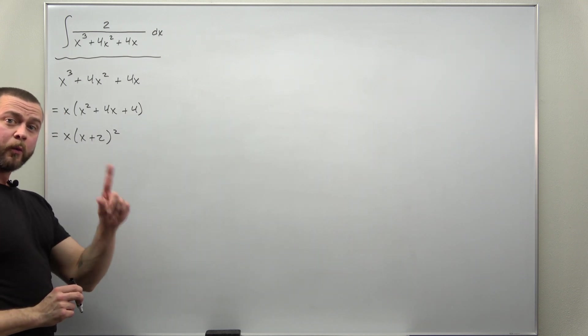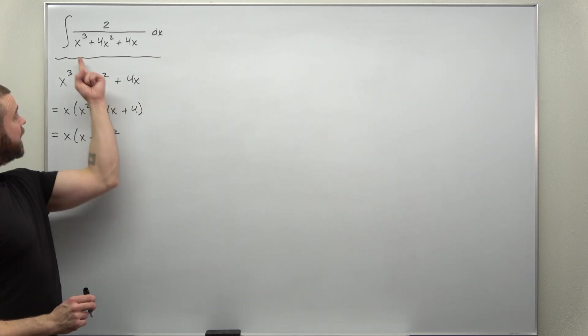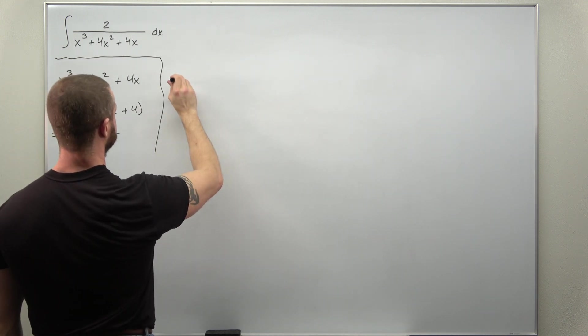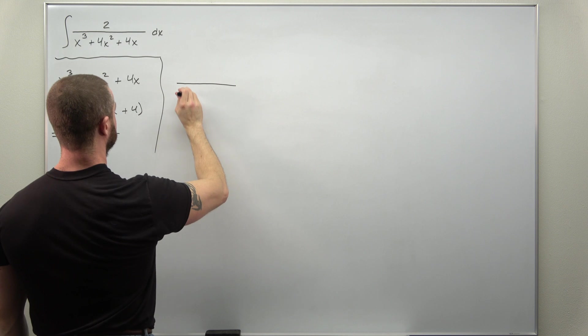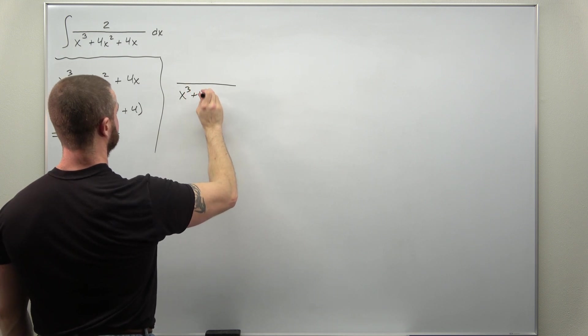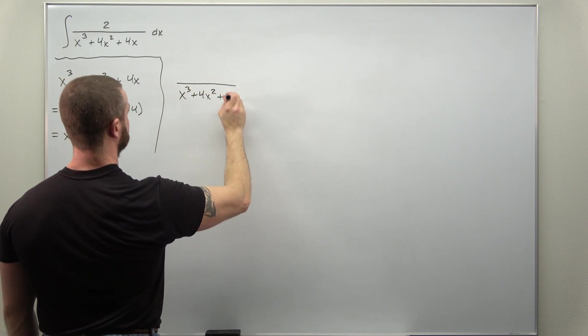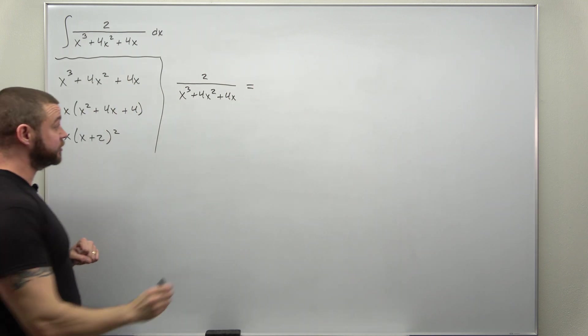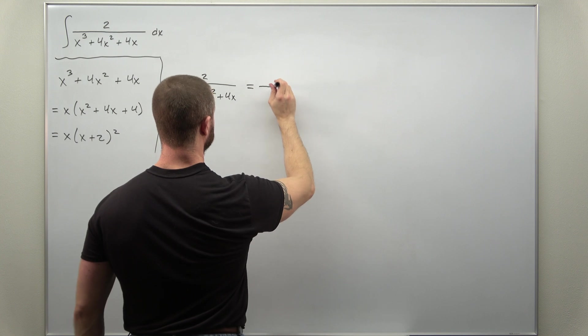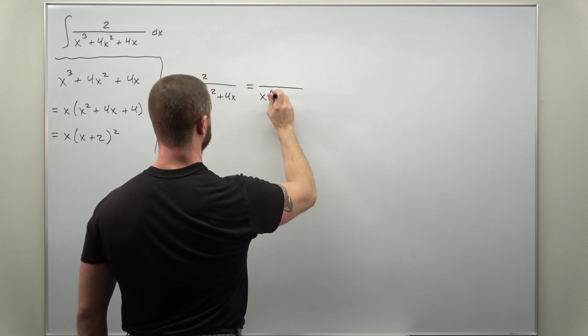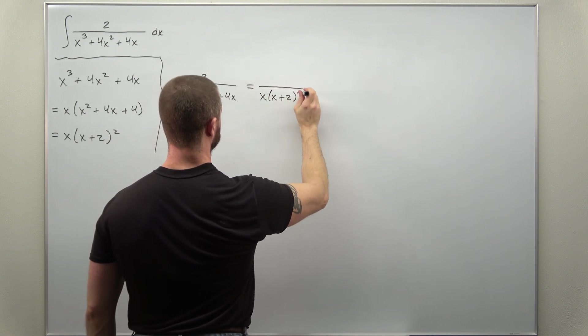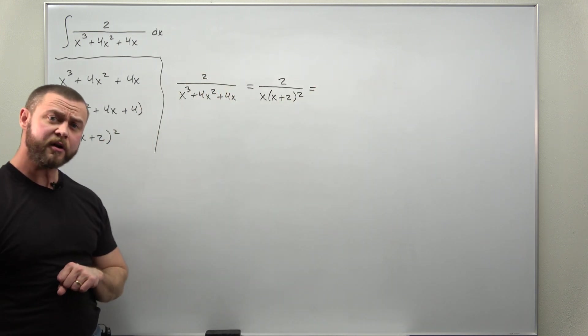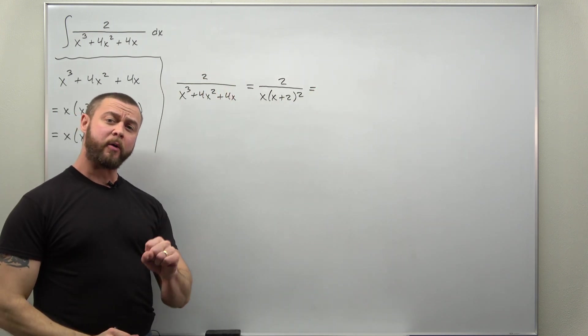Alright from here we can replace our original denominator with that and do our partial fraction decomposition. So first replace your denominator with the fully factored version. And from here we can write down our partial fractions.